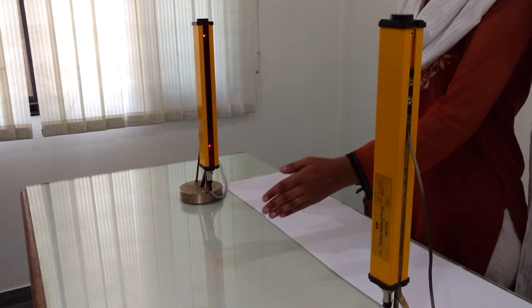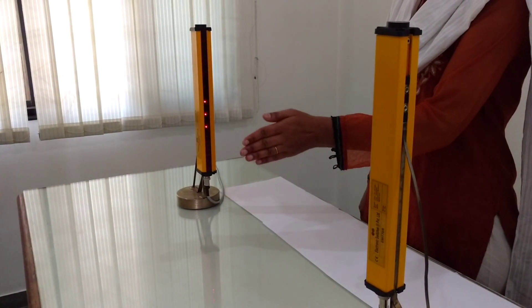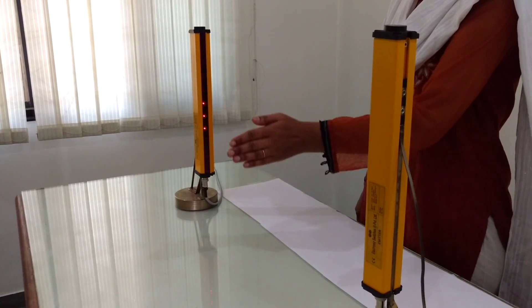Normal operation of the light curtain is shown. The LED indications are seen at the receiver end.